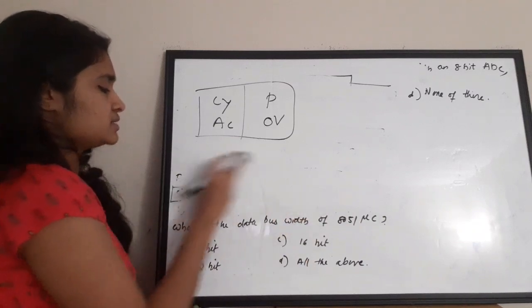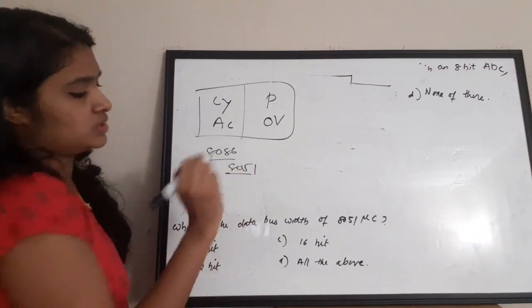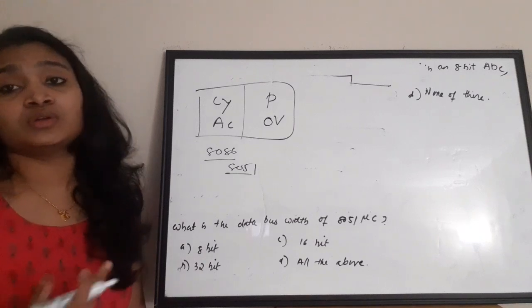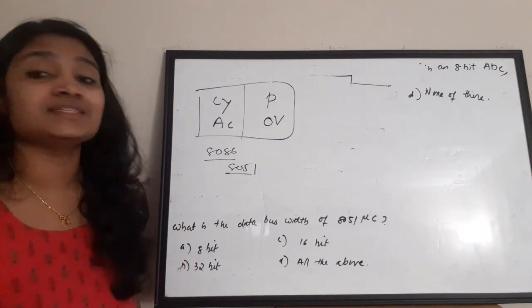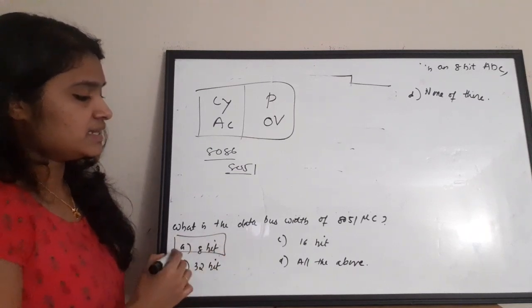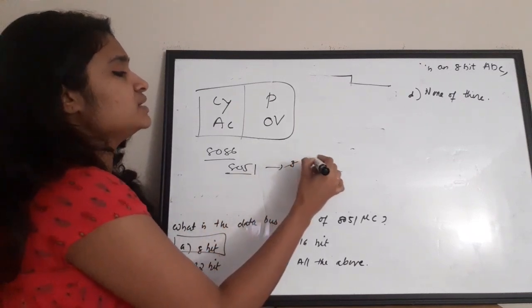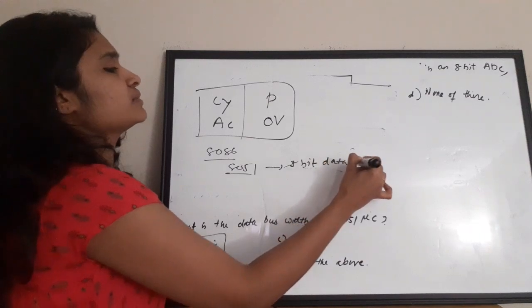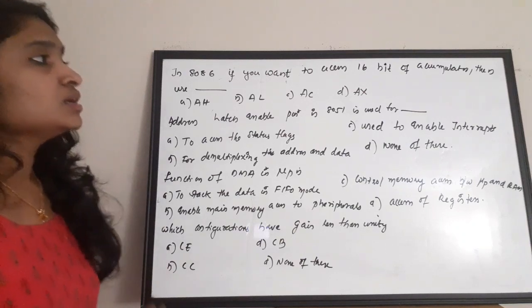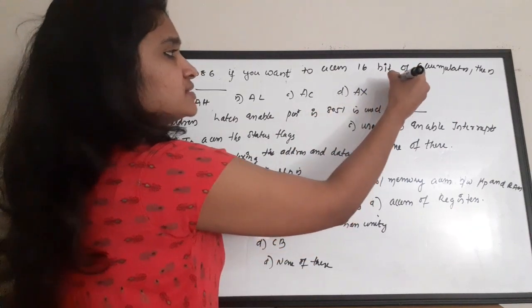Questions are being asked from both 8086 and 8051. The data bus width of the 8051 microcontroller is 8 bits — correct answer is option A. In 8086, to access the 16-bit accumulator, you use AX, which is divided into AH (higher 8 bits) and AL (lower 8 bits). To access the 16-bit accumulator, use AX — correct answer is option D.